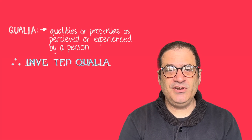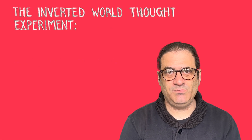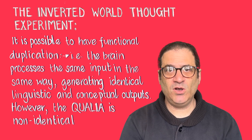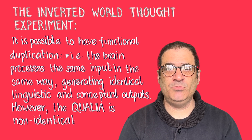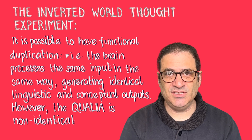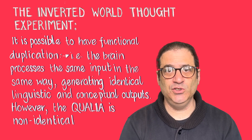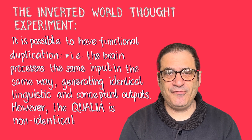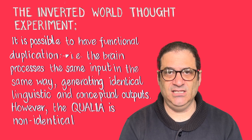The problem of inverted qualia is basically a thought experiment which says the following: it's possible to have functional duplication — i.e. people can say the same things and behave in the same ways, and their minds can effectively do the same things — but have different qualia, different experiences in the mind.